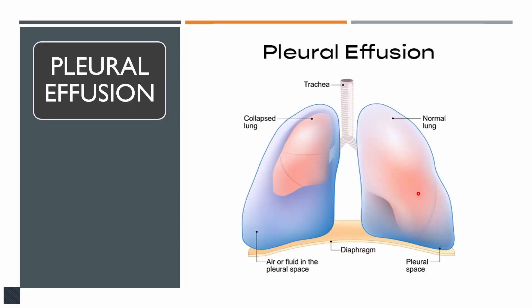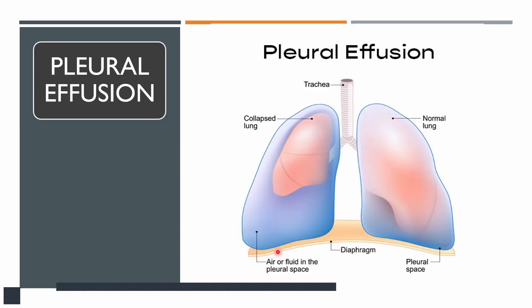Pleural effusion develops due to an imbalance between production and drainage — either there is more production than normal or drainage is defective. Initially fluid starts to accumulate in the pleural space, and with time the pleural effusion gets bigger. It causes the lung to collapse and shift towards the hilum, and once the pleural effusion becomes massive, it can push the mediastinum towards the opposite side.